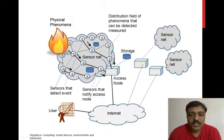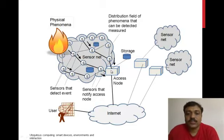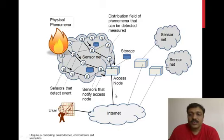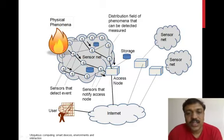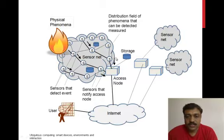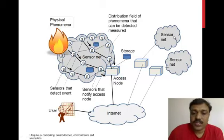These sensors detect events, and you have an access node connected with some sort of network along with storage. From the physical environment, sensors generate data, and this access node connected with a system can notify the user if anything happens. This connection of sensors is basically called a sensor network, which can have different types of access nodes for sensing different kinds of environments.